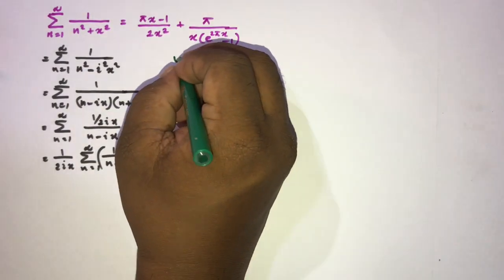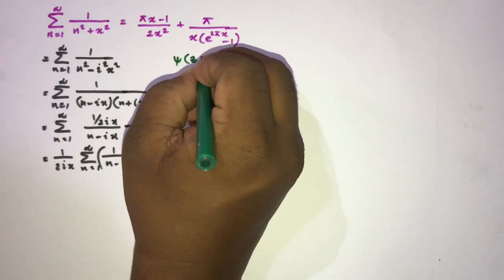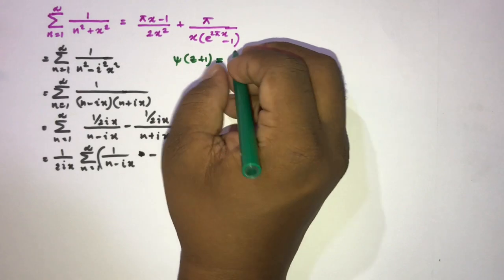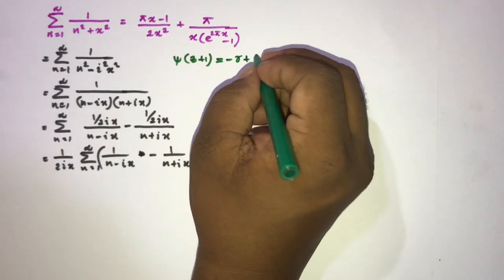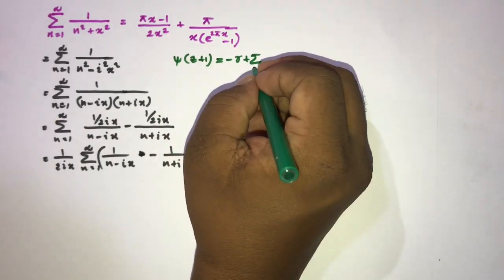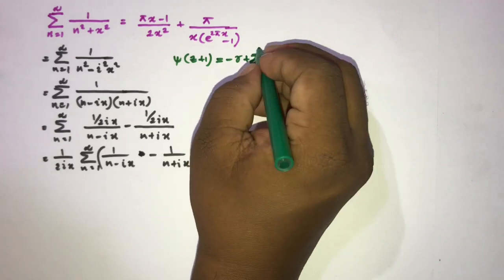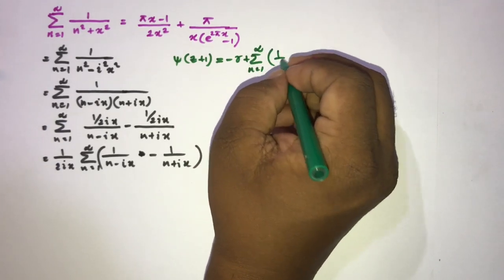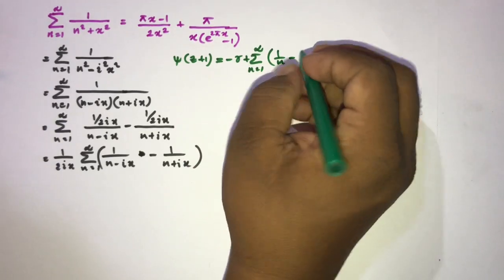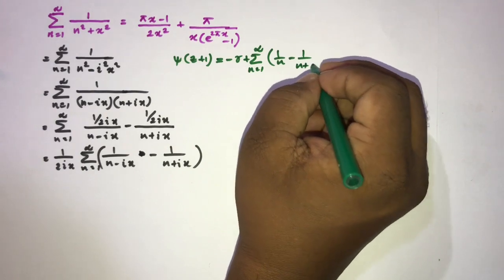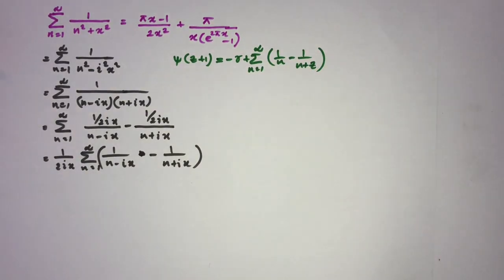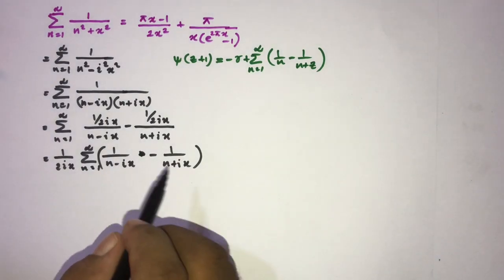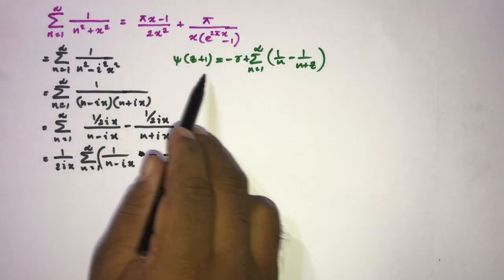Now we know the digamma function identity: ψ(c + 1) = −γ + ∑(n=1 to ∞) (1/n − 1/(n + c)), where γ is the Euler–Mascheroni constant. I am going to convert our series to use this digamma identity.